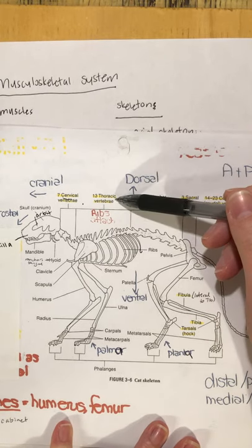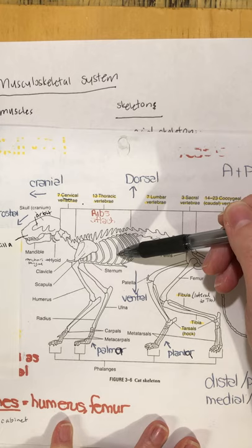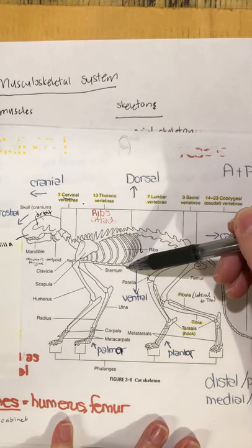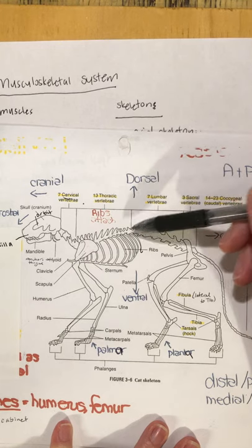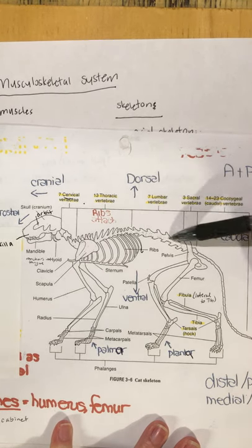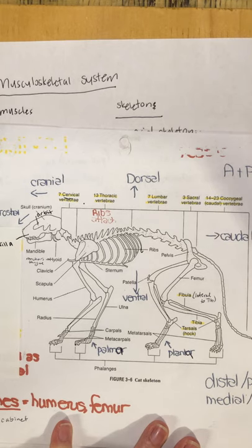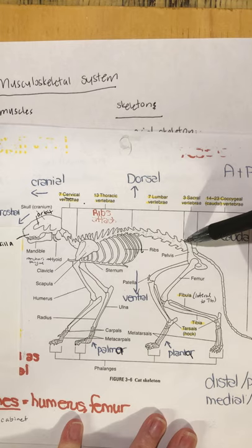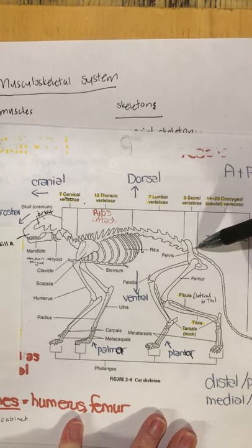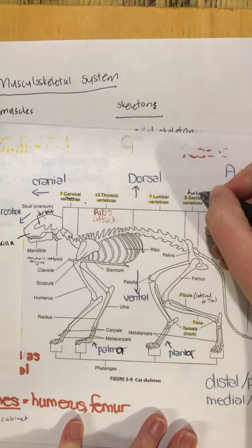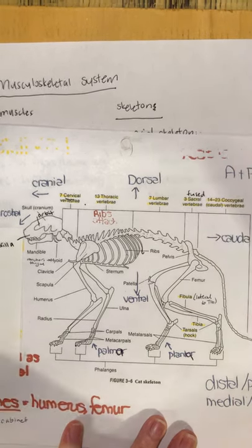The thoracic vertebrae articulate with the ribs. The ribs connect with cartilage to the sternum or breastbone. Moving more caudal, we have the lumbar vertebrae — these are over the abdomen. Then we have the sacral vertebrae, which articulate with the pelvis. These bones are all fused — there are three but they're all stuck together.